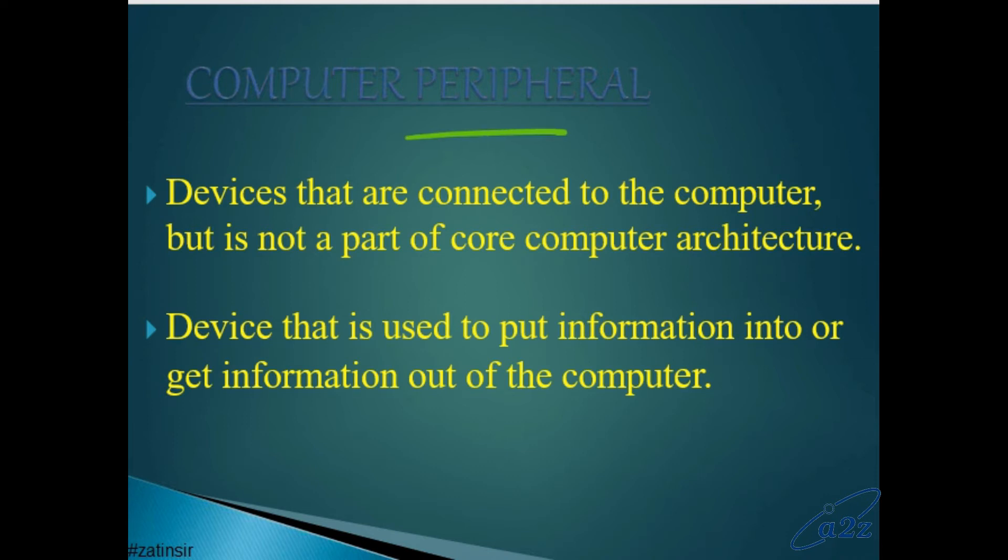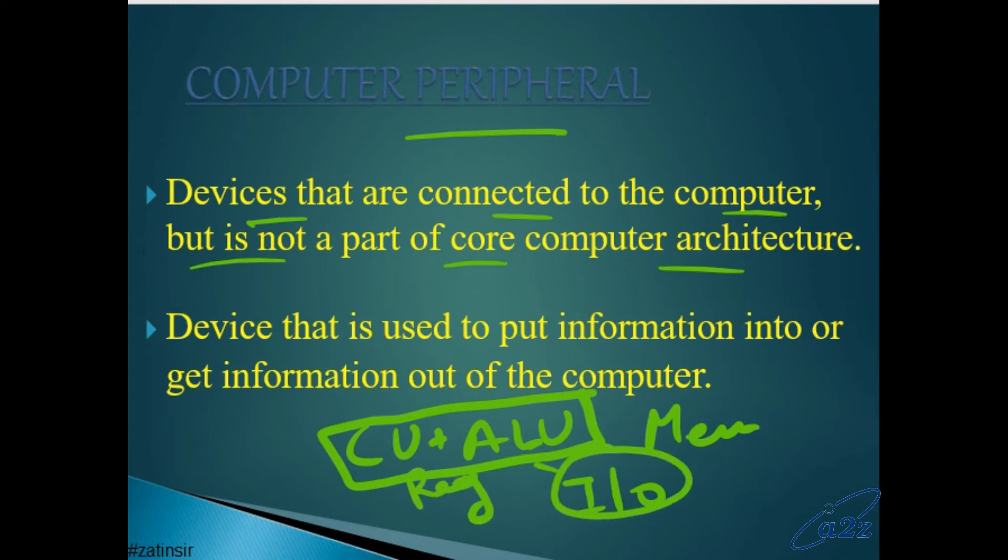What is the computer peripheral? Computer peripheral devices are connected to the computer but it is not part of core computer architecture. Core computer architecture me kya chize hoti hai: CU, ALU, memory, and I/O. Core computer architecture sirf CU plus ALU, memory, registers, input output me sirf keyboard ya koi input device hoti. Core computer architecture part nahi, that is known as peripheral device. That is used to put information into or get information from computer. If computer se aap information de rahe ya le rahe, is tarah ki devices hoti that are also called as computer peripheral devices.